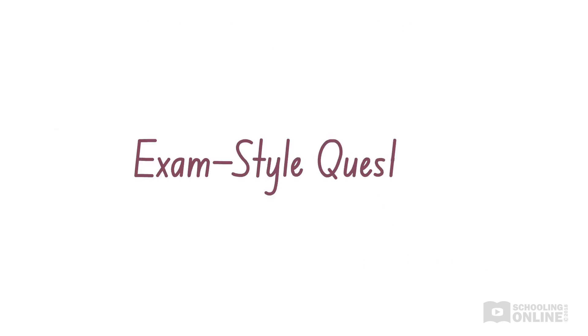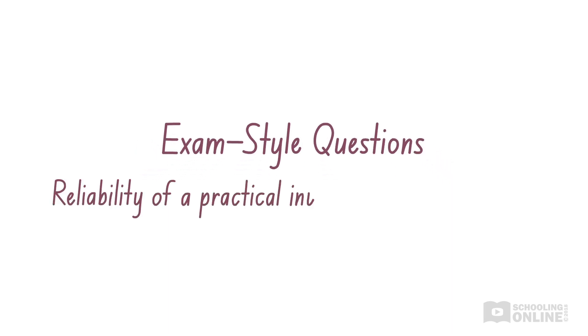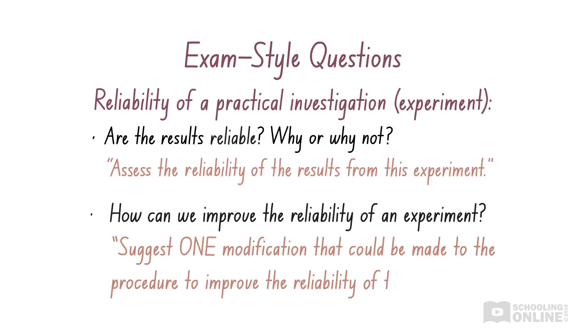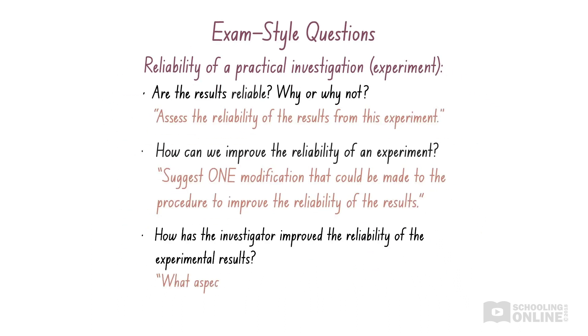Let's look at the type of questions you could be asked in exams about reliability. Once again, these are usually asked in the context of a practical investigation, with questions asking: Are the results reliable? Why or why not? How can we improve the reliability of an experiment? And, how has the investigator improved the reliability of the experimental results? The answers to each question will vary, depending on which experiment you are asked about. In general, you should think about what random errors are present, and how you can reduce the size of these random errors.